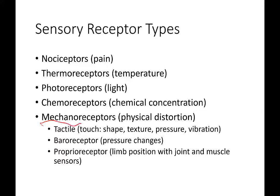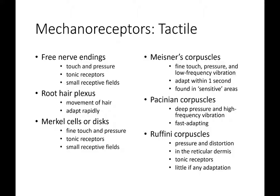Mechanoreceptors are the tactile receptors more associated with the skin. They include free nerve endings and the root hair plexus — each hair follicle has a nerve at its base that allows us to detect movement like a breeze blowing our hair. We can sometimes associate that movement with something that passed by us quickly.